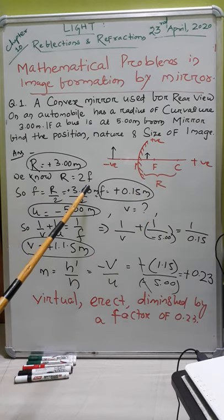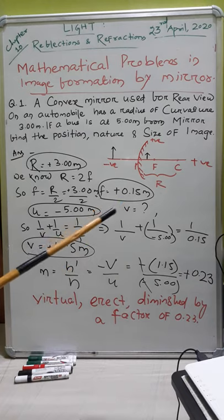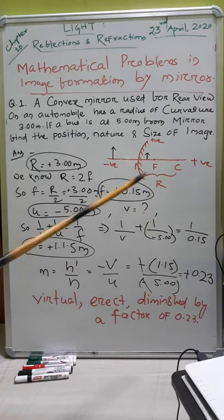Next, R is equal to 2F. So F is equal to R by 2, which is 3 by 2, or 1.5 meter, which is again with plus sign.